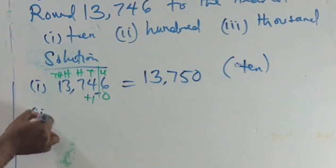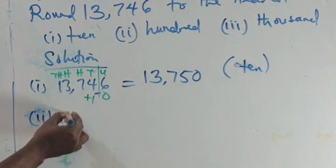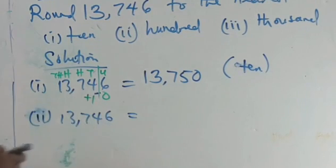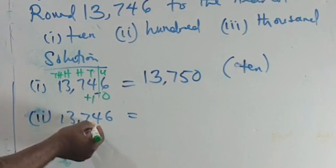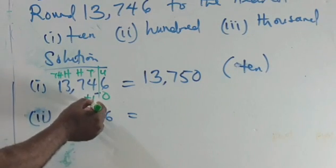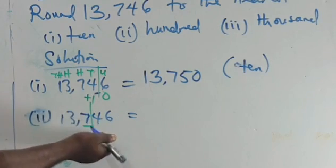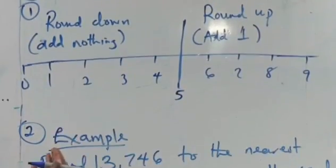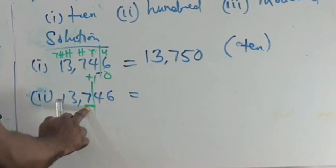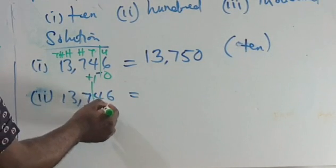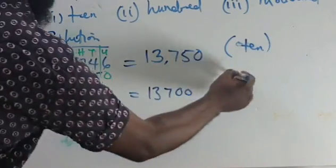For the second one, we want to round 13,746 to the nearest hundred. The same thing — this is units, tens, hundreds, thousands, tens of thousands. We are stopping at the hundreds digit, which is 7. We consider the next digit, which is 4. Since 4 falls below five, we add nothing to this 7. We then change the digits after it to zero. So the answer is 13,700.